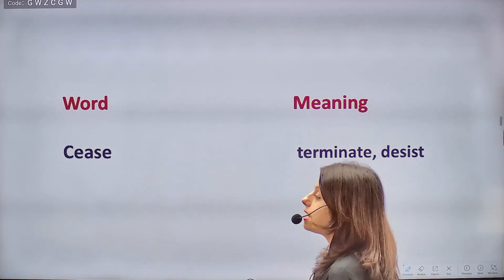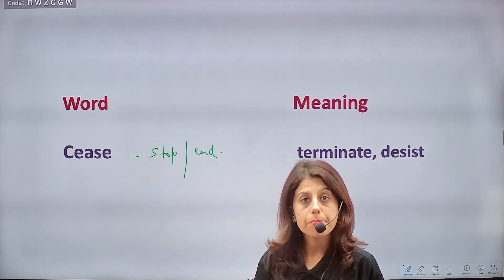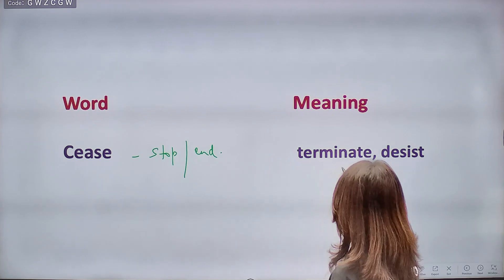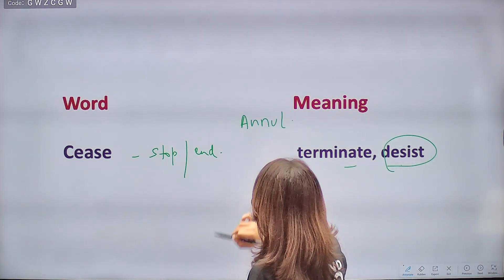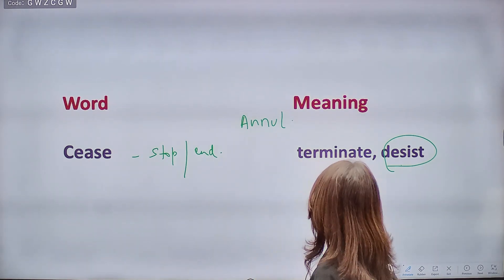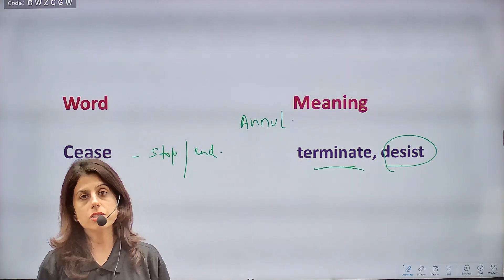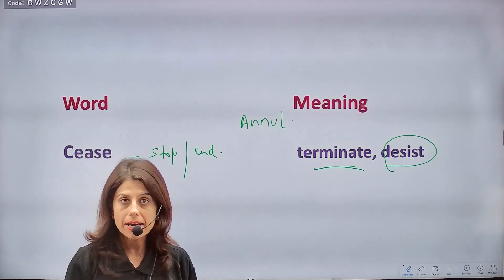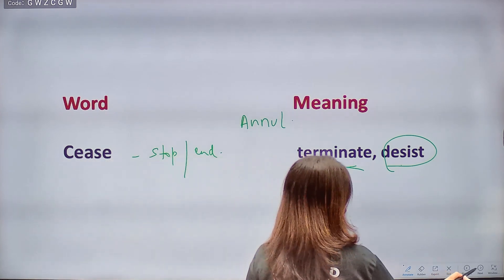Next word is CEASE, meaning to stop or end completely — when you completely stop doing anything. Synonyms: terminate, desist, annul (meaning to end). Antonyms of cease: start, begin, initiate, originate, commence.